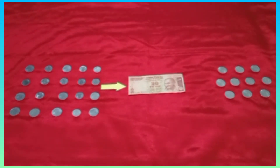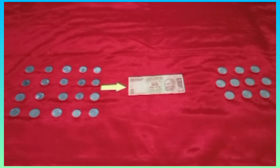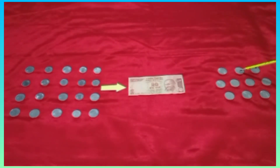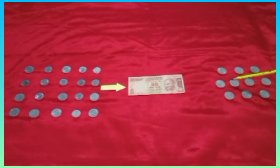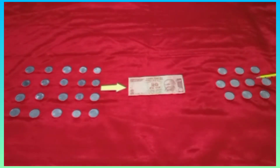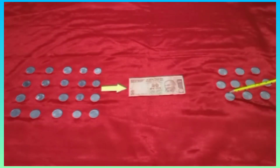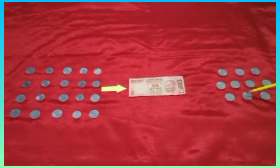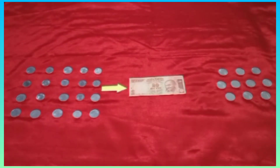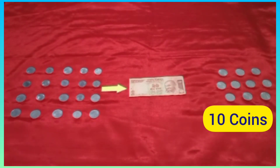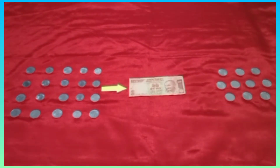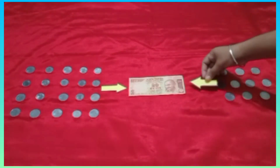Dear students, let us see how many 2 rupee coins make a 20 rupee note. Counting: 1, 2, 3, 4, 5, 6, 7, 8, 9 and 10. So dear students, the value of 10 two-rupee coins is equal to 1 twenty-rupee note.